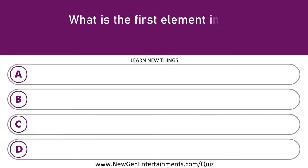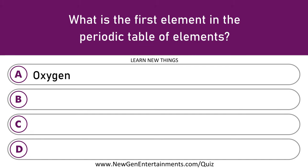What is the first element in the periodic table of elements? Hydrogen.